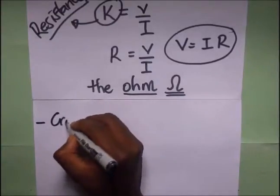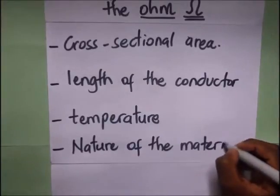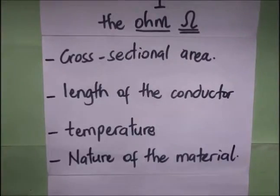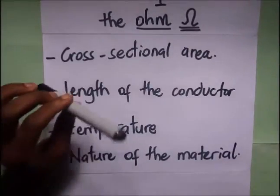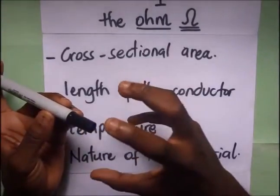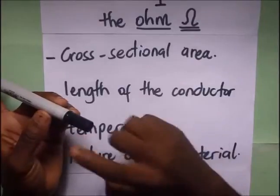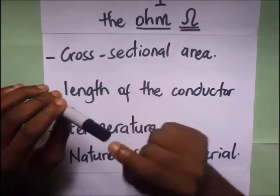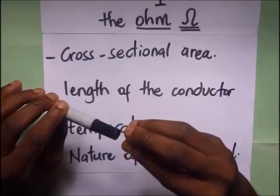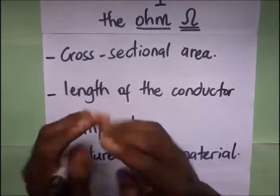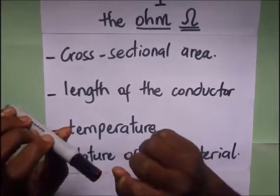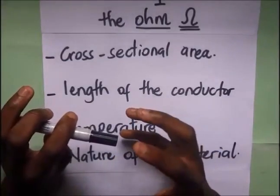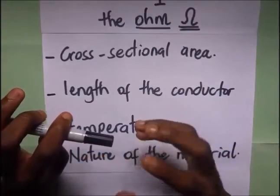Here we have cross-sectional area. How does cross-sectional area affect the resistance of a conductor? If the cross-sectional area — let's assume this was a wire — if this cross-sectional area was bigger, it means that you're going to have more electrons drifting through at the cross-sectional area, meaning that the resistance of the conductor will be less. If this cross-sectional area is narrow or small, the electrons drifting will have a very narrow space to drift through, and so you're going to have more resistance. The higher the cross-sectional area, the more the electrons that flow, and so the more charge and therefore the less resistance.